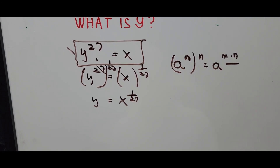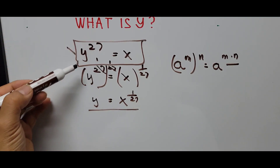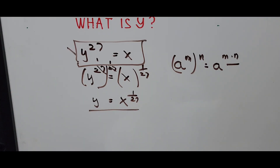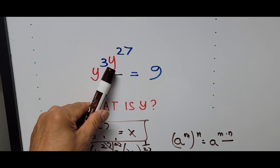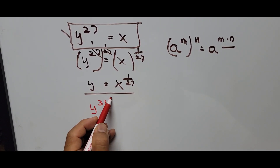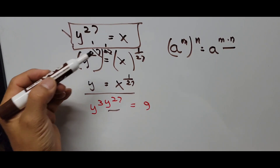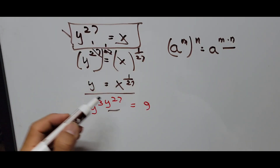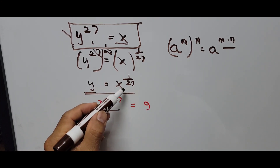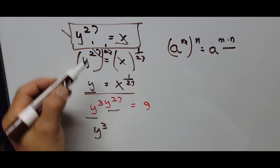Next, we substitute the value of y in terms of x into the original equation. The original equation is y raised to 3 times y raised to 27 equals 9. The value of y raised to 27 is x, and the value of y is x raised to 1 over 27. So substituting, we get: x raised to 1 over 27, raised to the exponent 3x, equals 9.